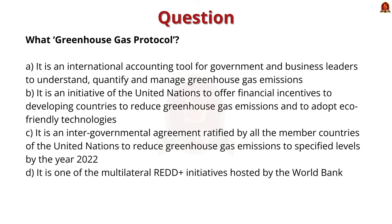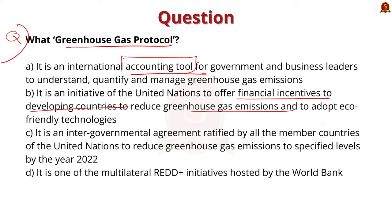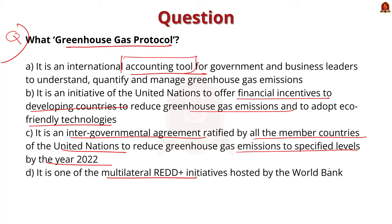Look at this previous year prelim question. What is the Greenhouse Gas Protocol? Option A: It is an international accounting tool for governments and business leaders to understand, quantify, and manage greenhouse gas emissions. Option B: It is an initiative of the United Nations to offer financial incentives to developing countries to reduce greenhouse gas emissions and adopt eco-friendly technologies. Option C: It is an intergovernmental agreement ratified by all members of the United Nations to reduce greenhouse gas emissions to specified levels by 2022. Option D: It is one of the multilateral REDD+ initiatives hosted by the World Bank. The correct answer is Option A.